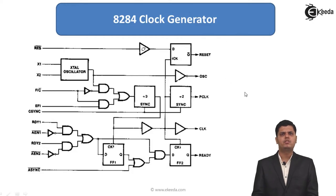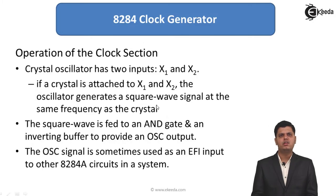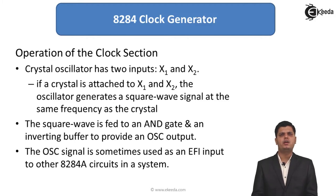The operation of the clock section: the crystal oscillator has inputs x1 and x2. If a crystal is attached to x1 and x2, the oscillator generates a square wave signal at the same frequency as the crystal. The square wave is fed to the AND gate and the inverting buffer to provide the oscillator output.